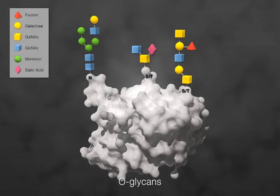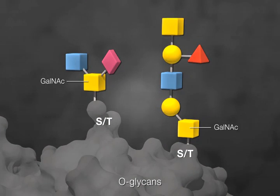O-glycans start with the addition of an N-acetylgalactosamine, or GalNAc, residue to a serine, shown with an S, or threonine, shown with a T.